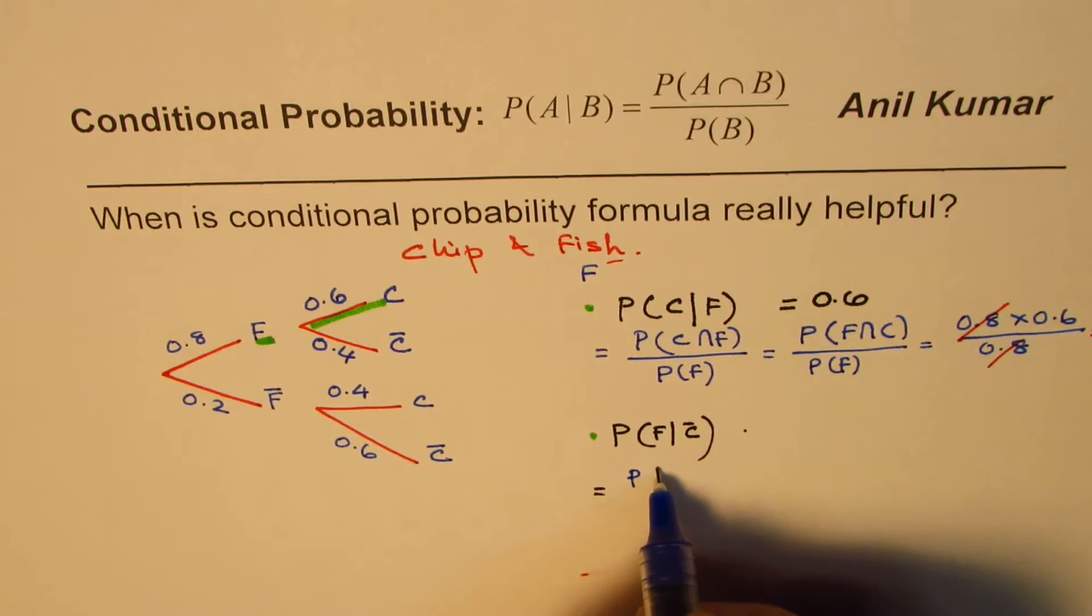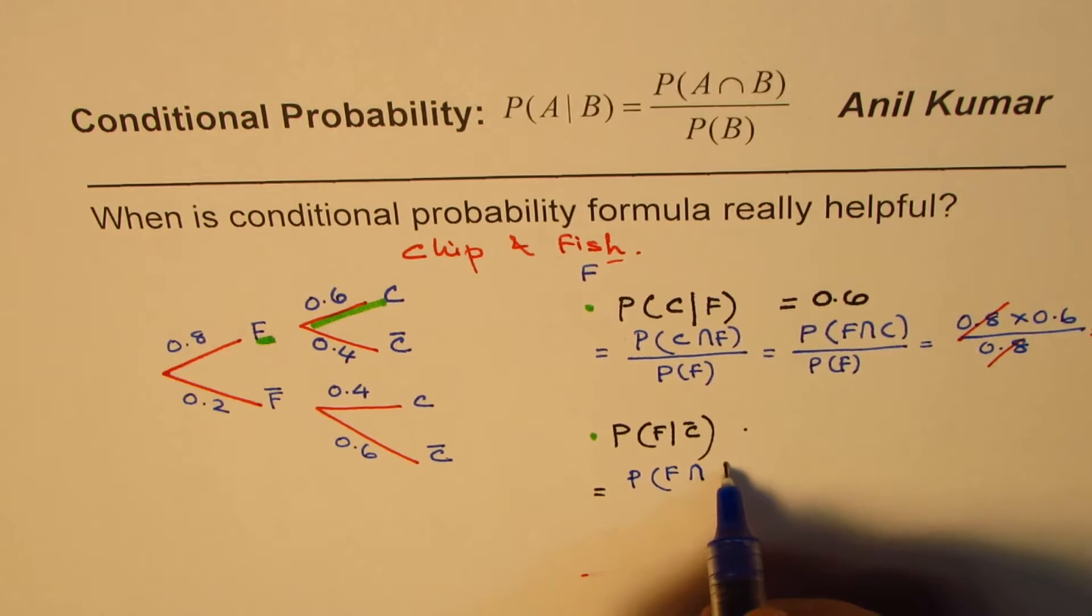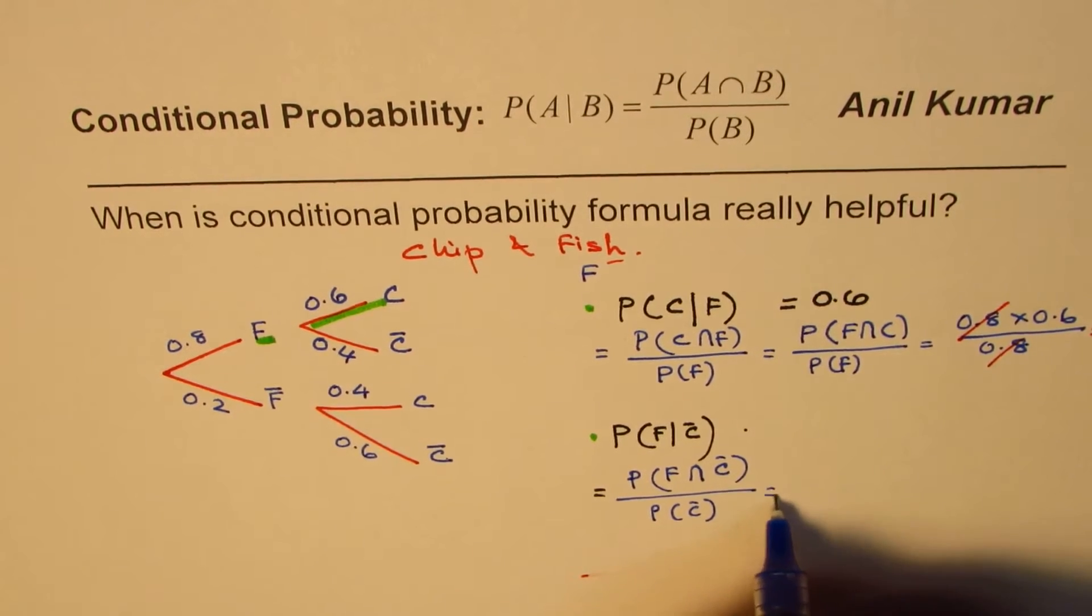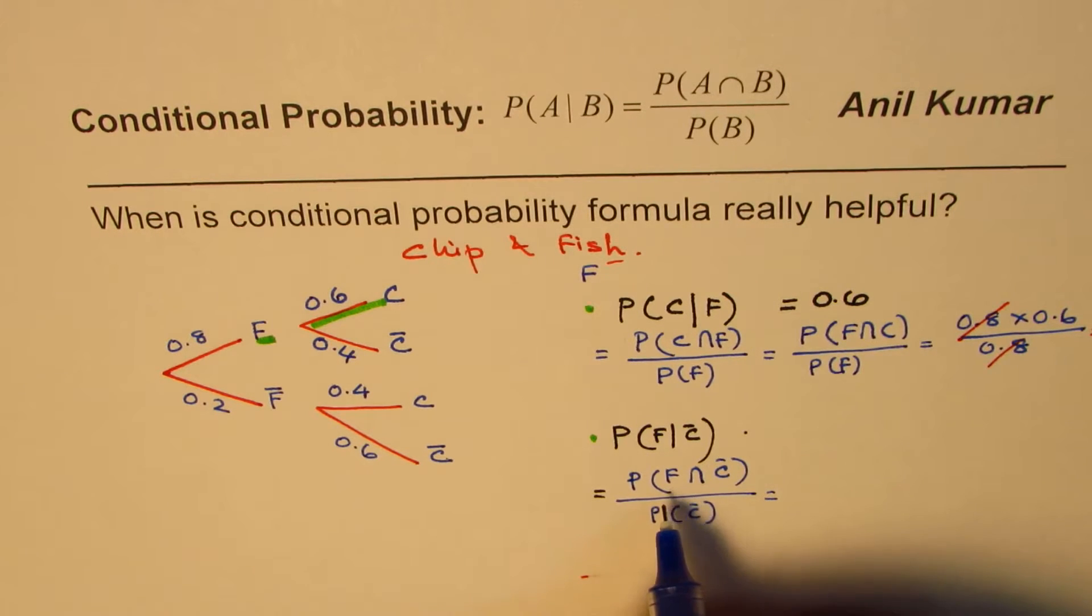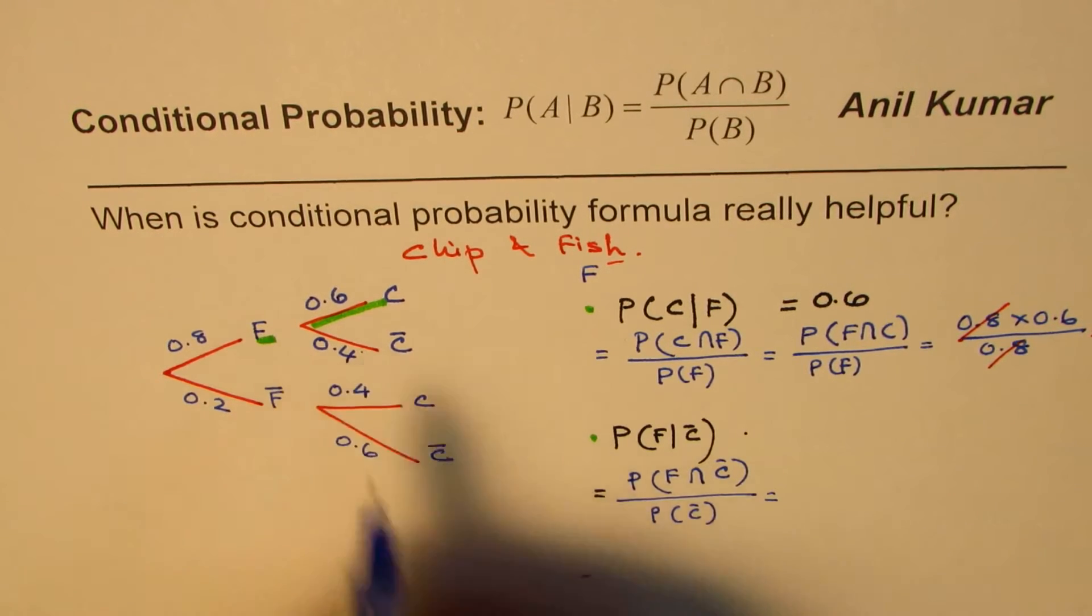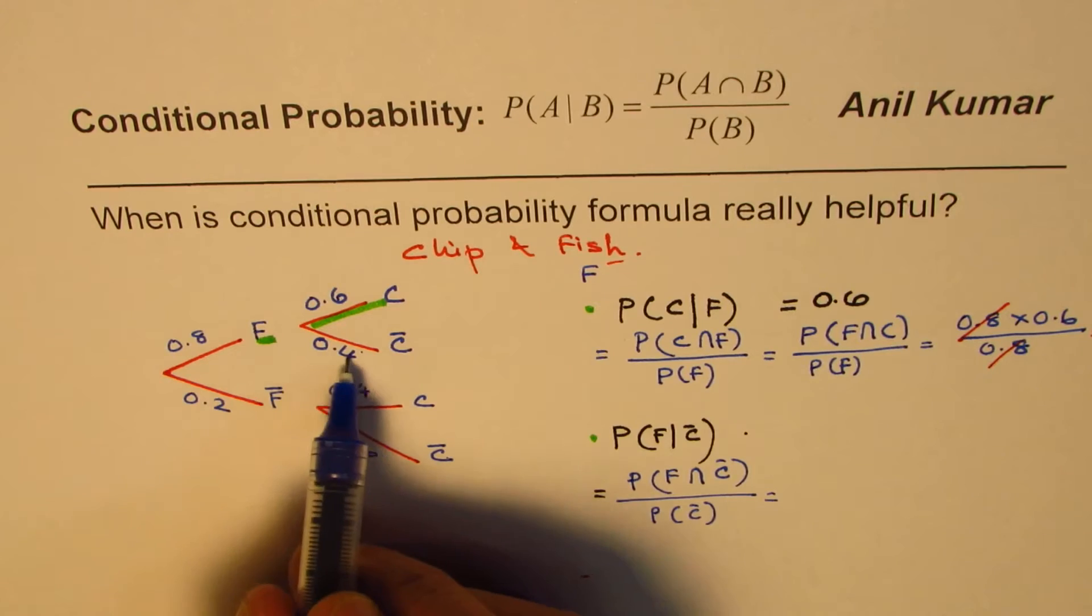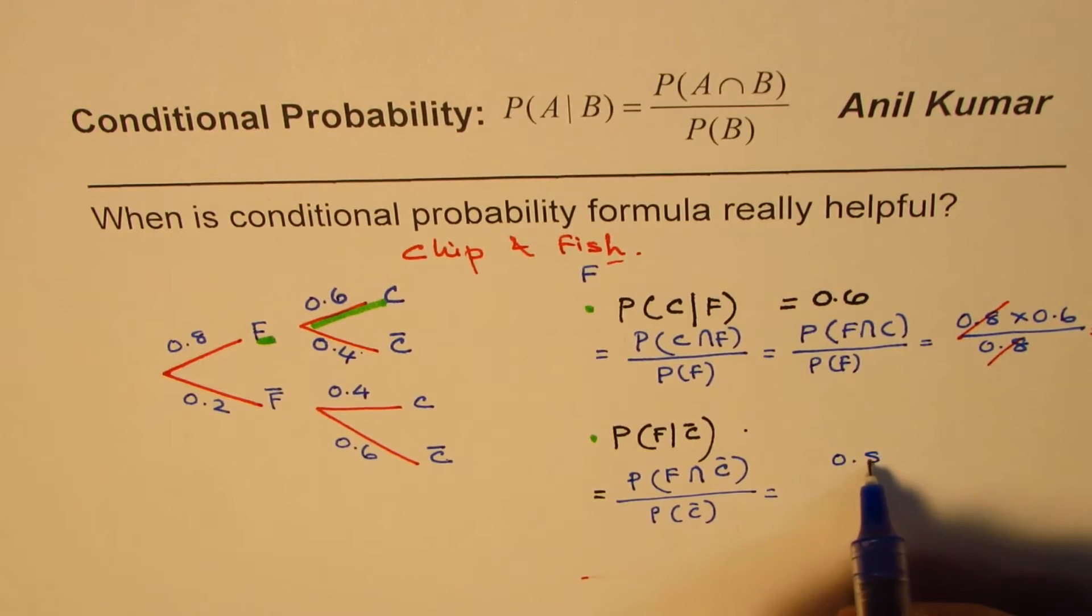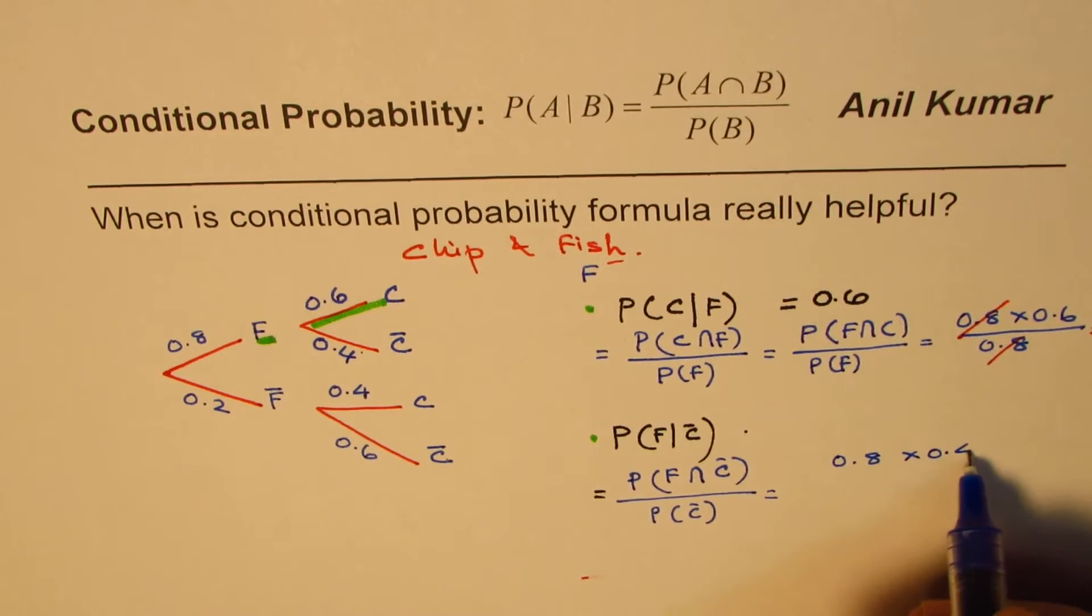So now it becomes probability of fish intersection not chips, divided by probability of not chips. Now this intersection, fish and not chip, is what? Fish and not chip is 0.8 times 0.4.